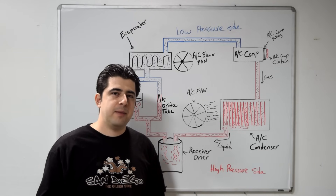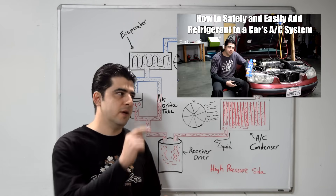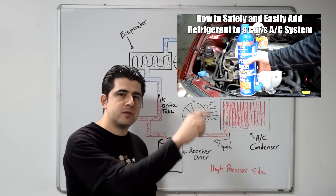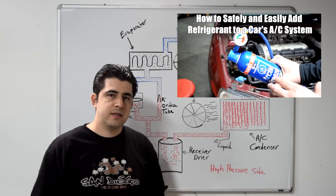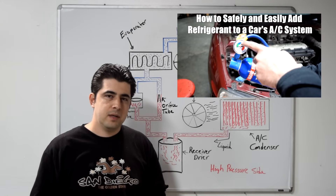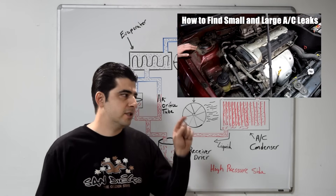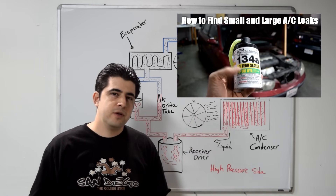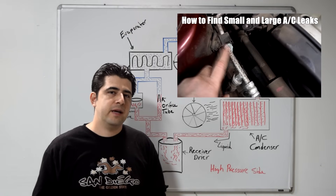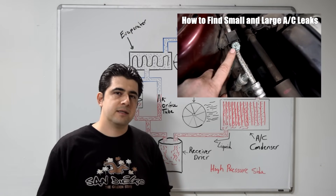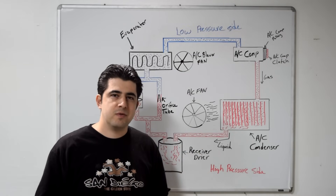If you're in that camp and just want to top off the refrigerant in the system, I suggest you watch this video — I'll put a link right here. It covers how to safely add refrigerant to your AC system. If you want to find out where your leak is, I suggest you watch this other video, which shows a quick and practical way for a do-it-yourselfer to find small and large AC leaks. Links for both videos will also be in the description.